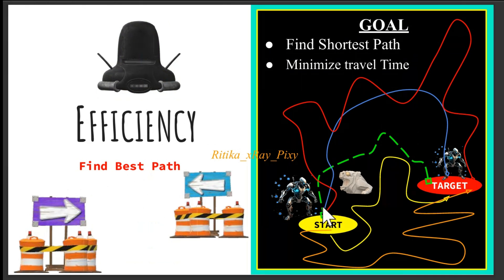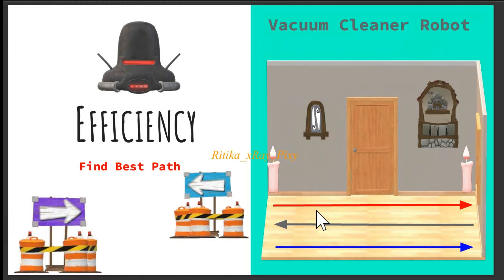Proper path planning also helps the robot find the shortest or most energy-efficient path — minimizing travel time also minimizes energy consumption. For example, a vacuum cleaner robot with an optimized path plan will cover and clean the entire area without repeating steps, saving battery time. Without optimized path planning, it would repeat steps and clean areas again and again.